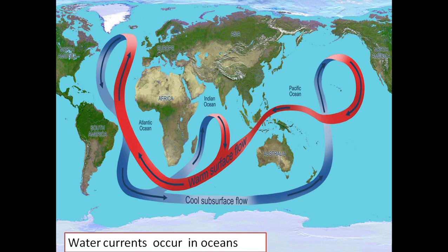Water currents also occur in oceans, similar to large rivers flowing underwater. Water in oceans near the equator is warmer than water near the poles. Warm water flows towards the poles and cold water flows towards the equator. Due to these temperature differences, water currents occur in oceans.